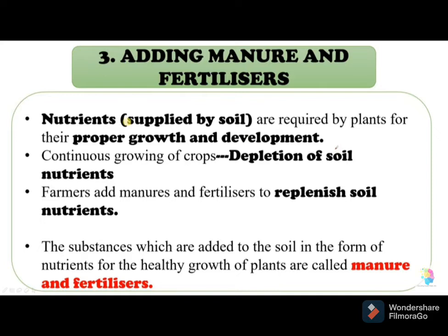Vermicompost is manure prepared by using earthworms to speed up the decomposition of plant and animal waste. Green manure involves growing plants such as sunny hemp, cowpea, and cluster beans, then ploughing these plants into the soil. These are the four types of manure.